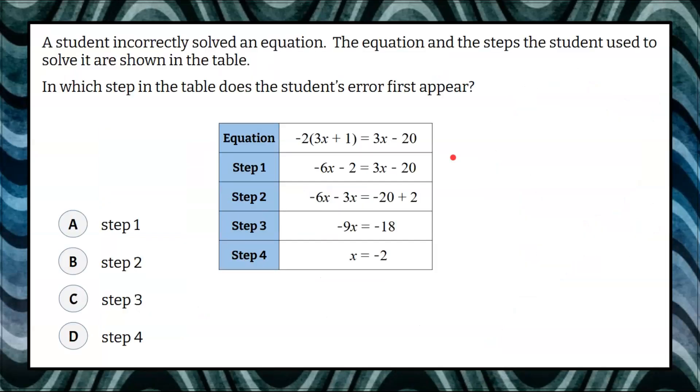Here's our problem. A student incorrectly solved an equation. The equation and the steps the student used to solve it are shown in this table. In which step in the table does the student's error first appear? So here is our table in steps one through four, and we're going to identify which step has the error.